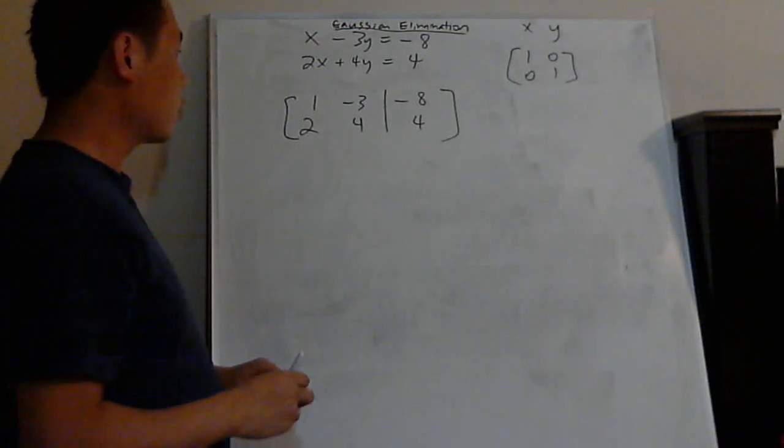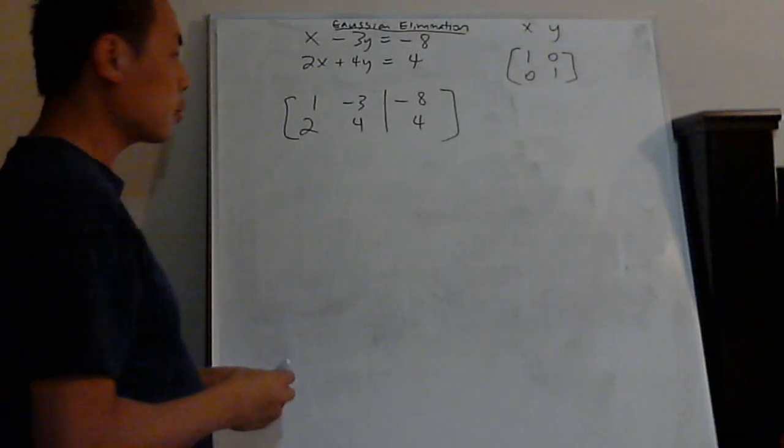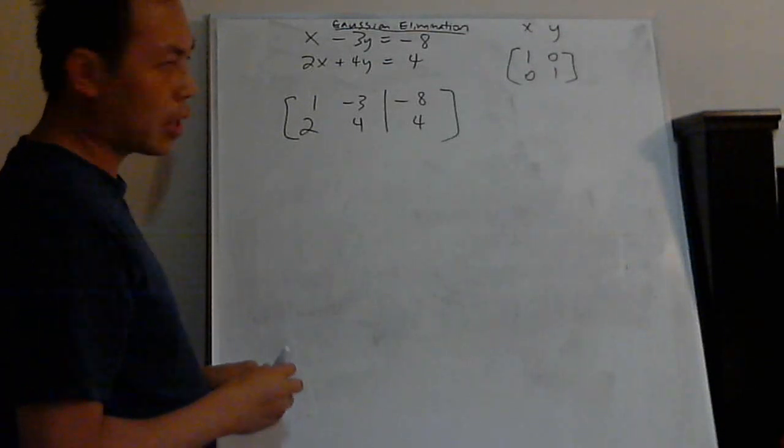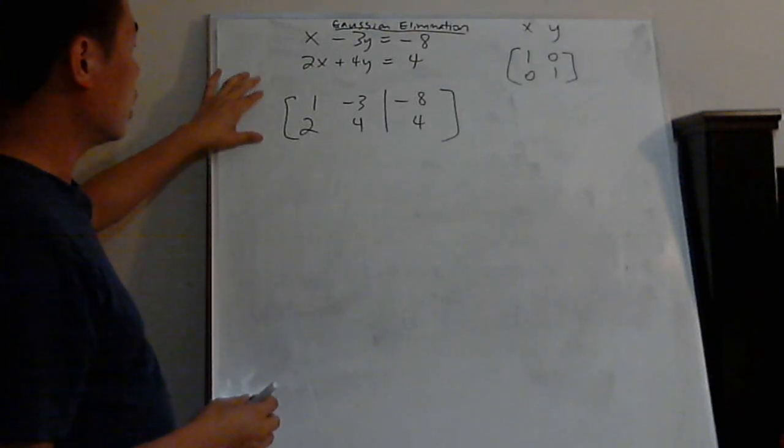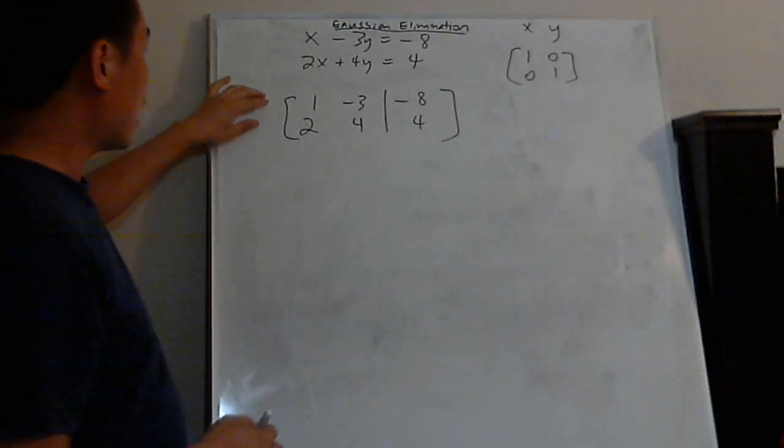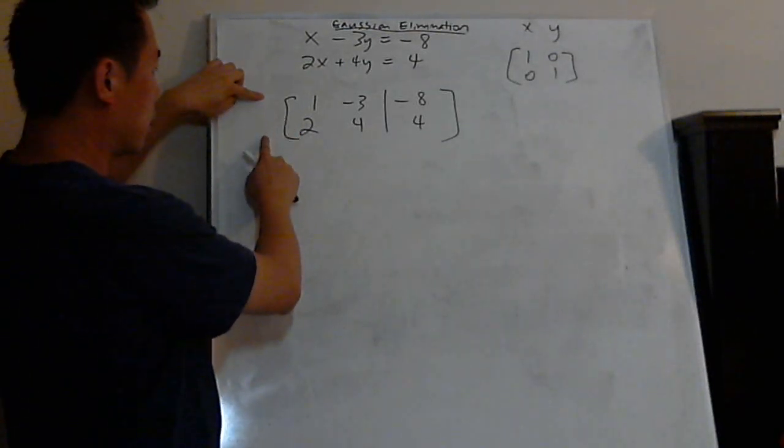But there's two things, there's rules that you can do in row reduction, and I'll try to go through all the rules in this one if it's possible. One of the first rules you can do in row reduction is that you can switch the rows.